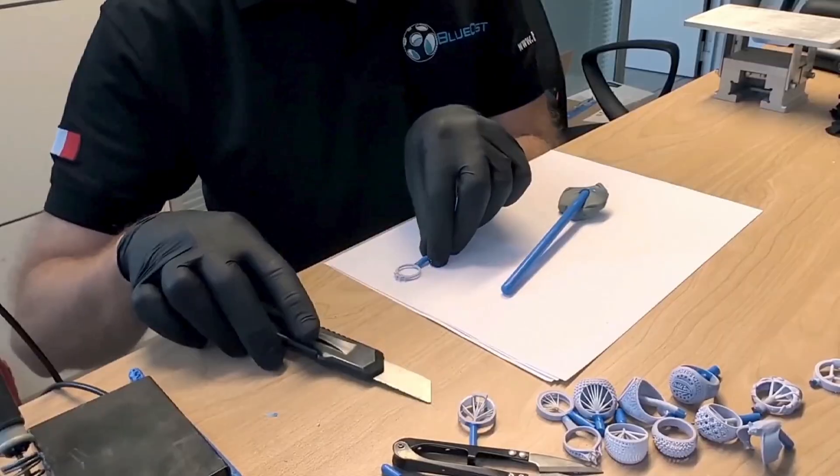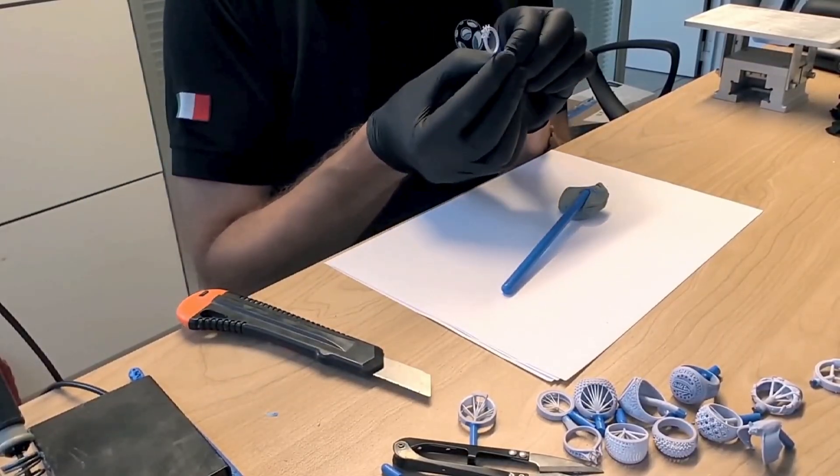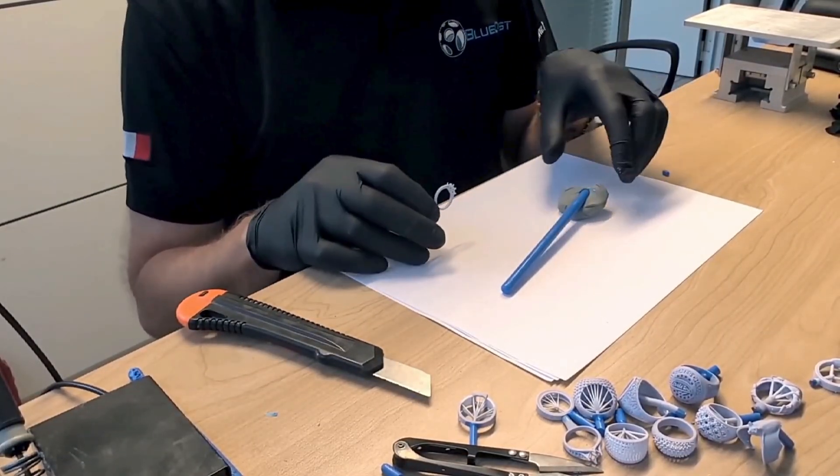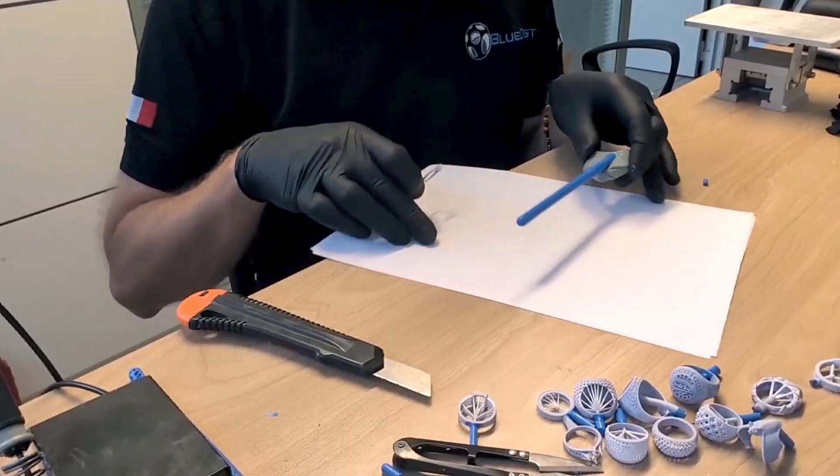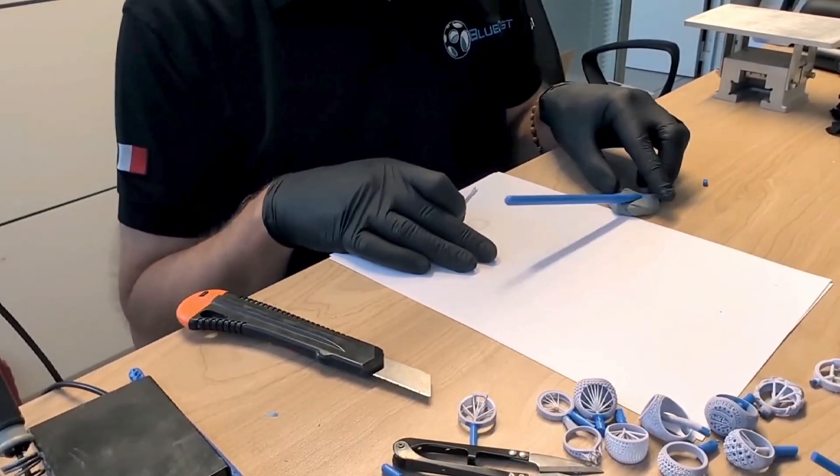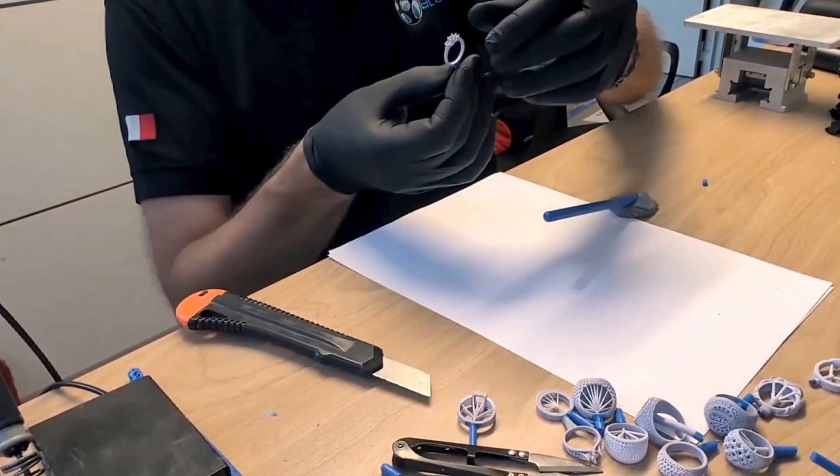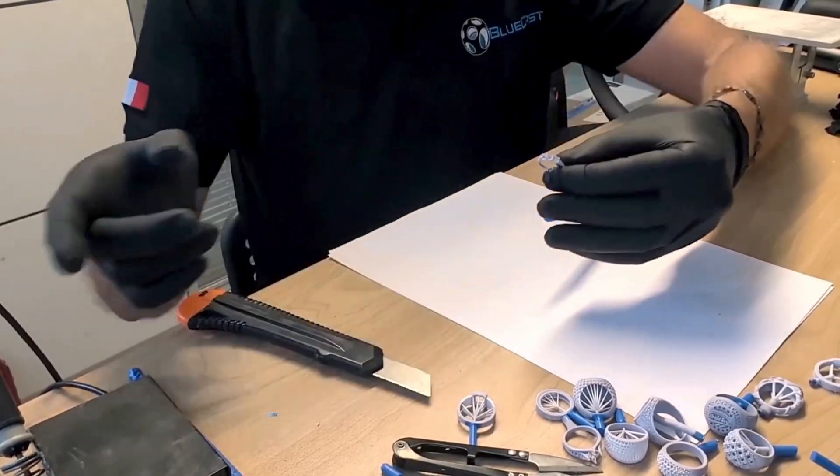Another general rule is to position models with engravings and concave parts so that they all face the top of the tree. This allows the investment to fill them easily and helps avoid air bubbles or fragile sections. I always make a habit of leaving at least three millimeters of space between each model.